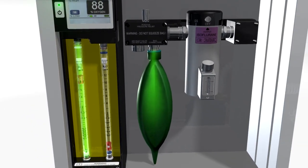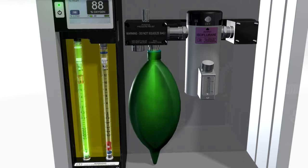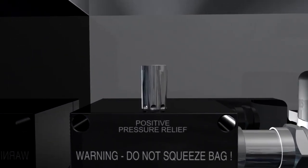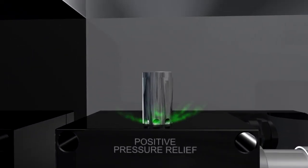The back bar serves three functions. First, the reservoir bag stores the oxygen. It can hold up to 2 liters. Second, the pressure relief valve limits pressure in the back bar to 5 centimeters of water, protecting the patient from harm.